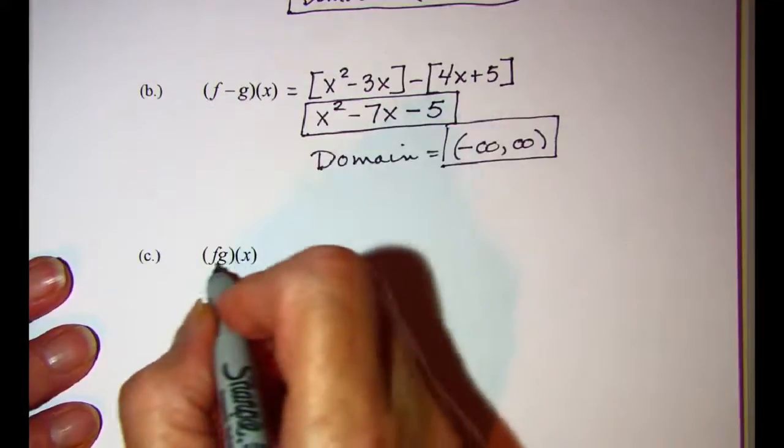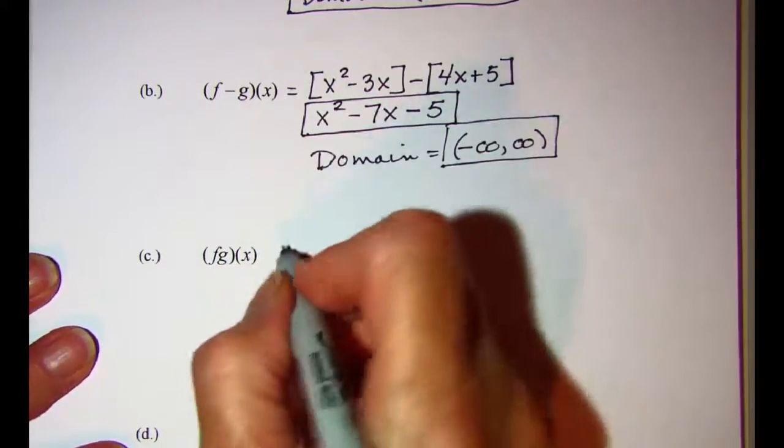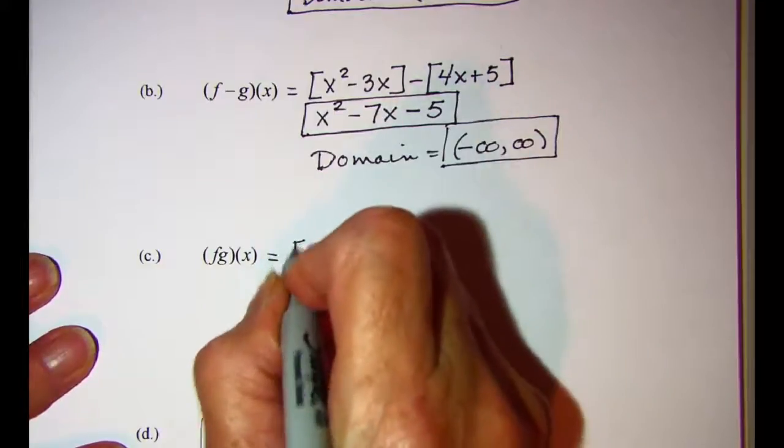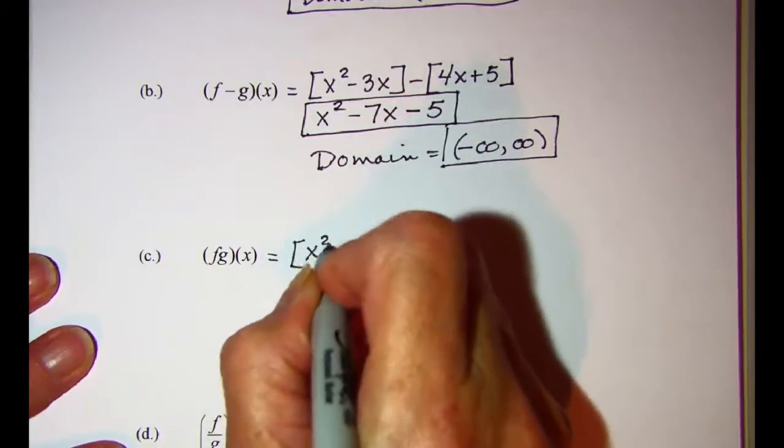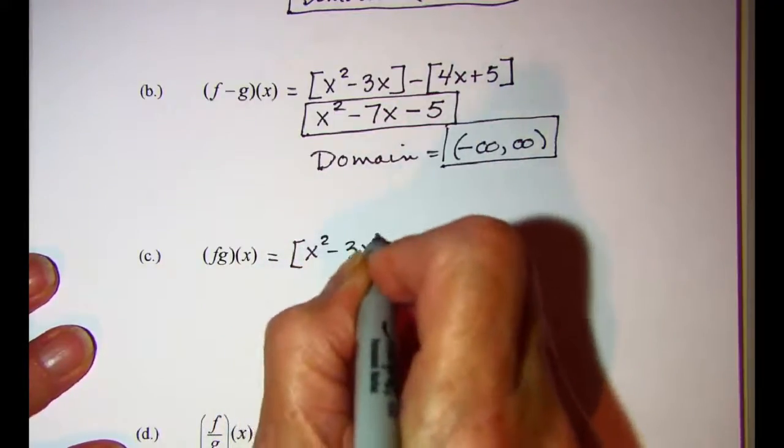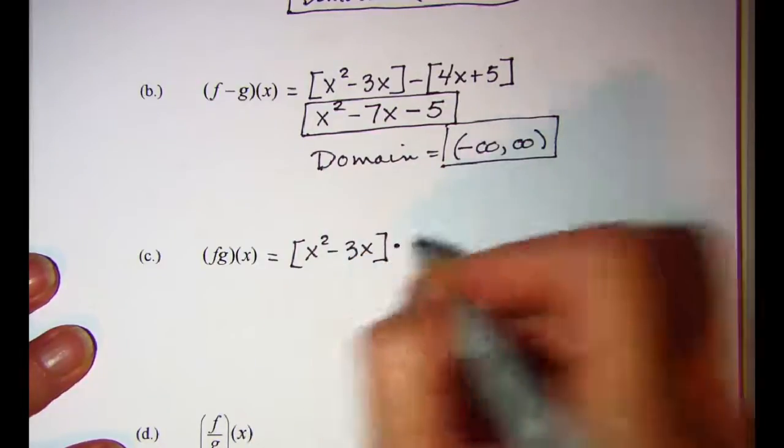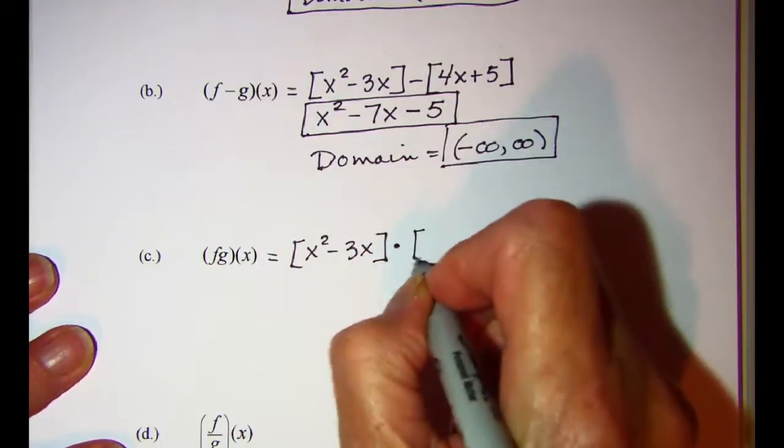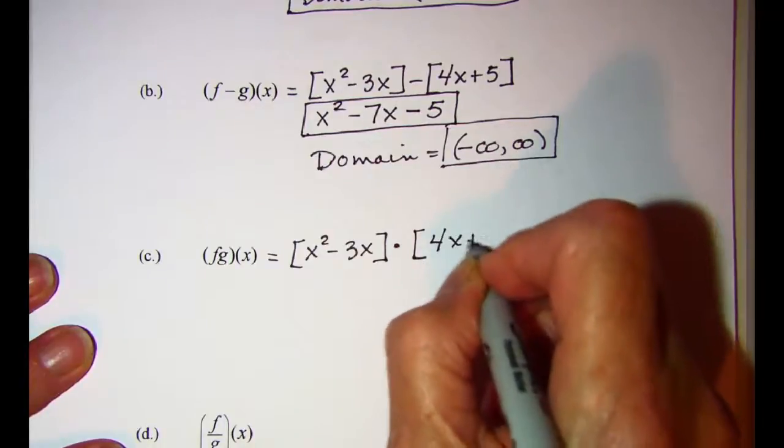For f times g of x, we'll take f of x, which is x squared minus 3x, and we'll multiply it by g of x, which is 4x plus 5.